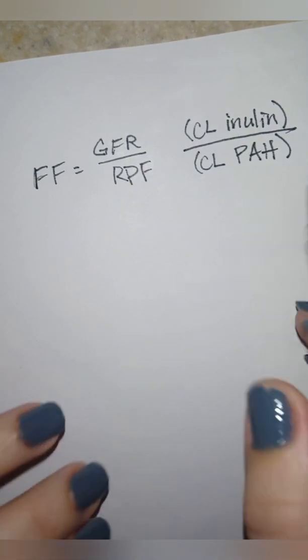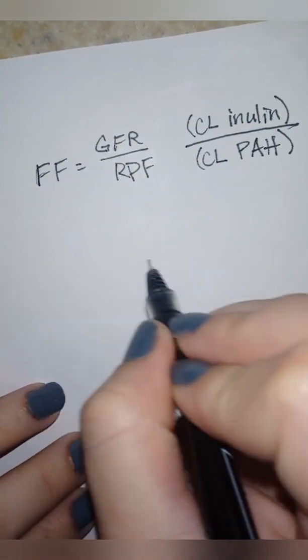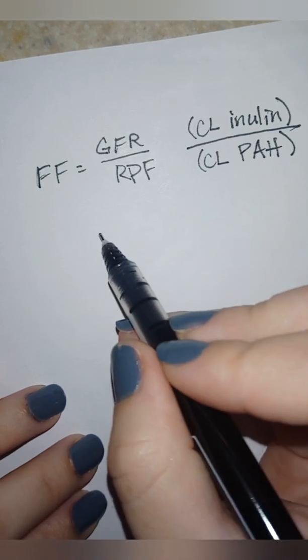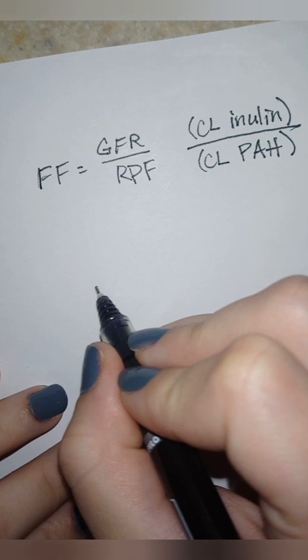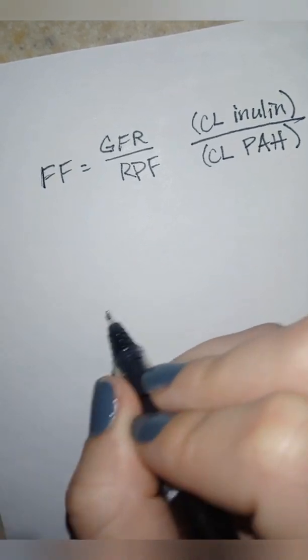So usually, at least in NBME, what they do is they give you a bunch of information, saying for example the concentration of inulin, the concentration of PAH. Sometimes they'll actually give you the clearance.